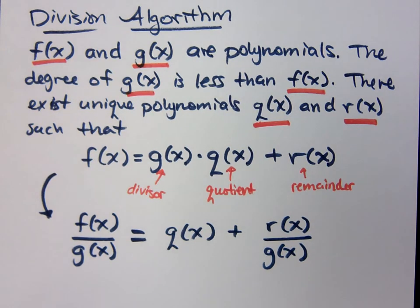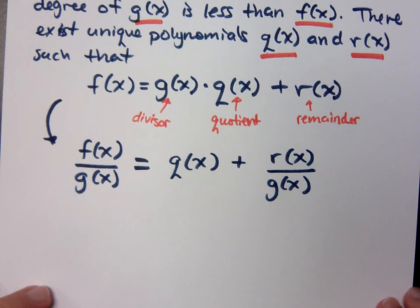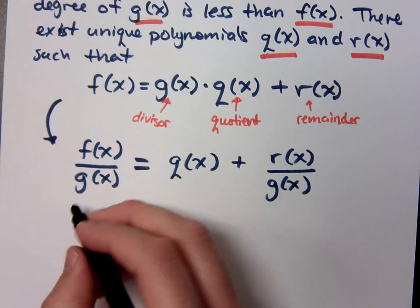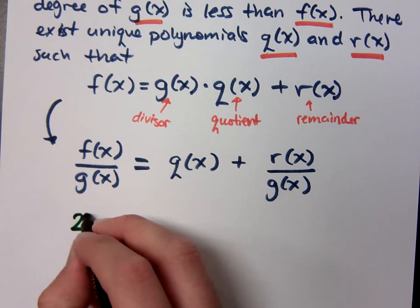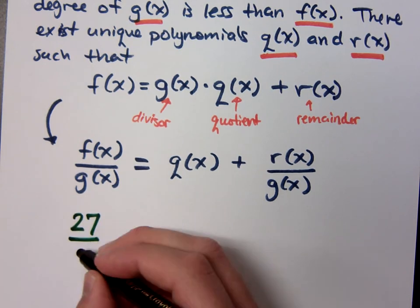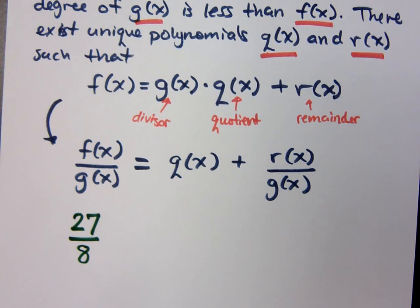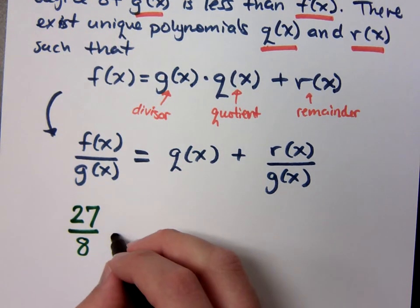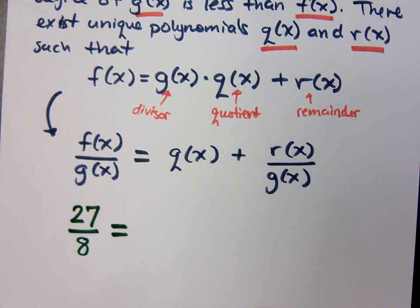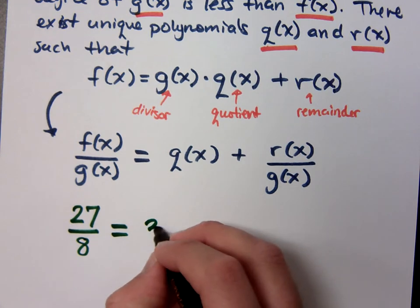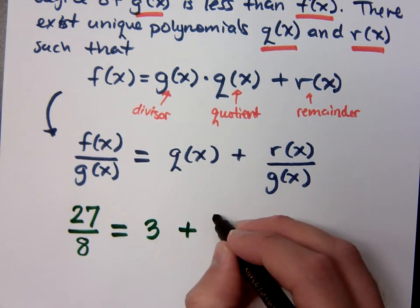Now, you may say this makes absolutely no sense. It does, but the reason it may not make sense is you're not used to seeing it this way. If I were to take, say, 27 divided by 8—if you rewrote this, how many whole times does 8 go into 27? It goes in three times, and then you have that fractional part of 3/8.